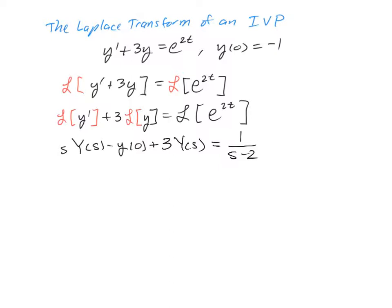The next step is to replace the initial condition with its value, which is negative 1. So we end up with s times Y of s plus 3 times Y of s plus 1 equals 1 over s minus 2.